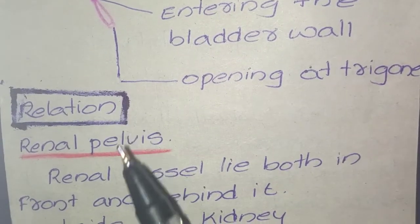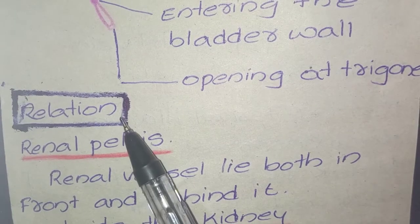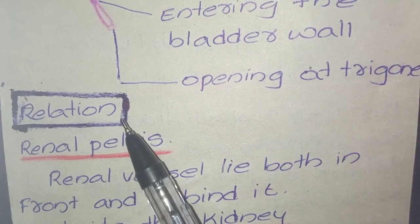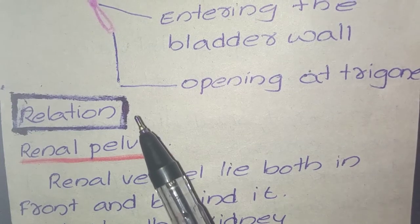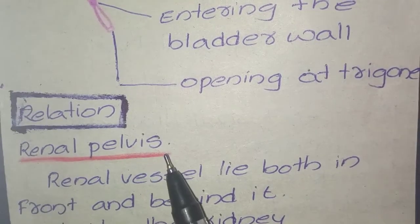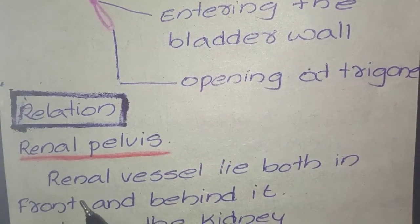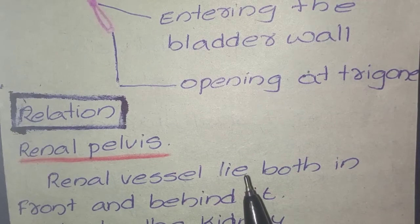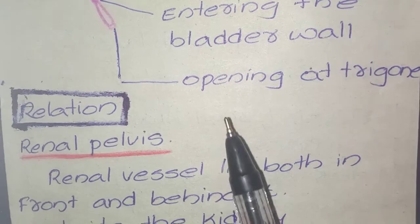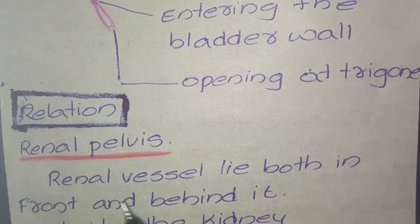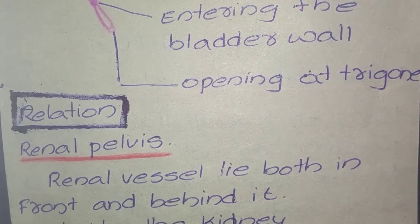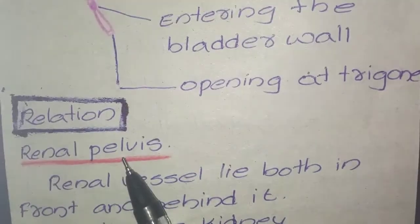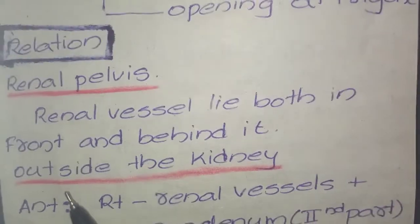We have divided the relations of the ureter based on the position of the ureter. At the renal pelvis, the renal vessels are the main relation — the renal vessels lie both in front and behind the ureter.